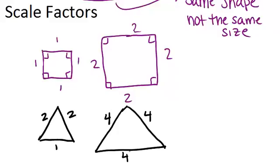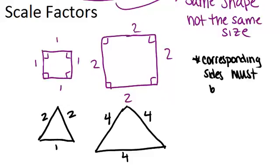In order to be similar, the corresponding sides must be in the same ratio. So, if you pick any pair of sides that are corresponding, the ratio between them should be consistent throughout the whole shape.